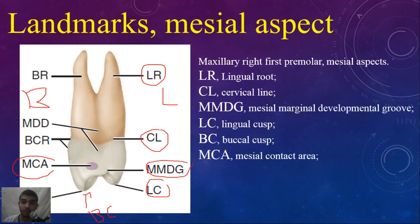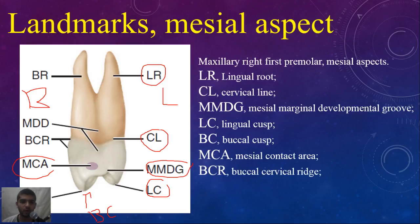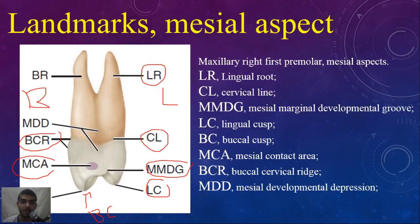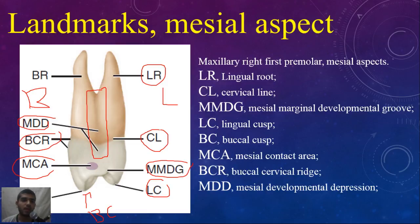We said contact area, not a contact point, and we will talk about that too. The buccal cervical ridge. And most importantly, from a mesial aspect, we can see the mesial developmental depression. This is a very important depression to distinguish between the maxillary first premolar and the maxillary second premolar — of course, the permanent ones. And the last landmark is the buccal root.